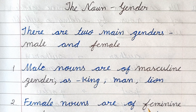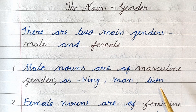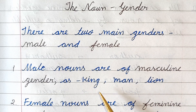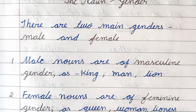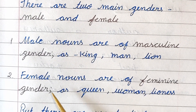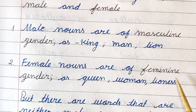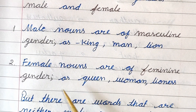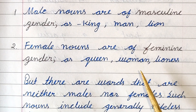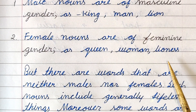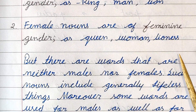Female nouns are of feminine gender — for example, queen, woman, lioness.